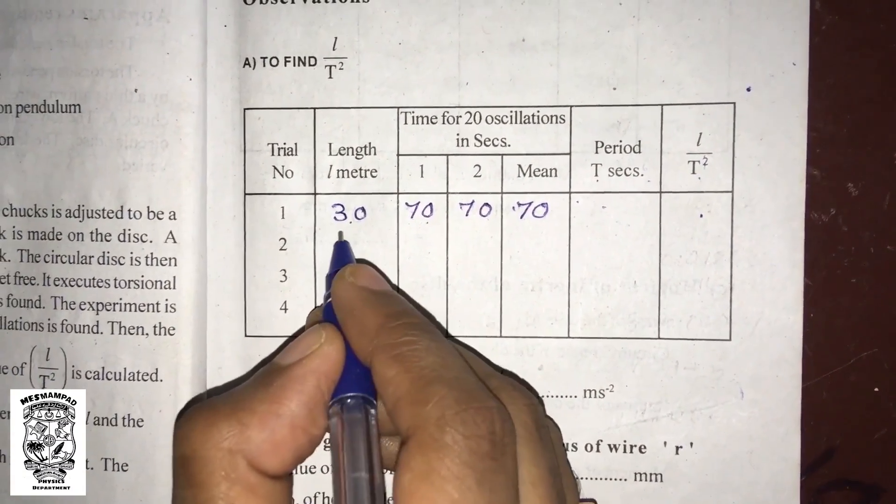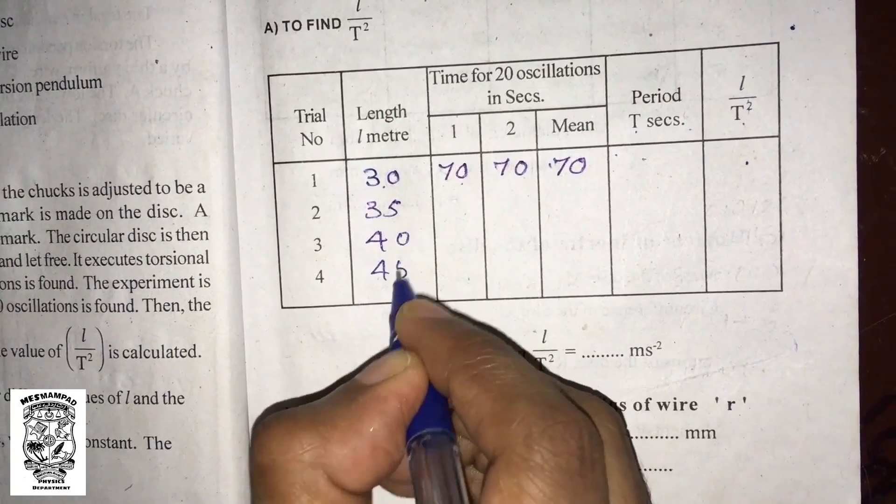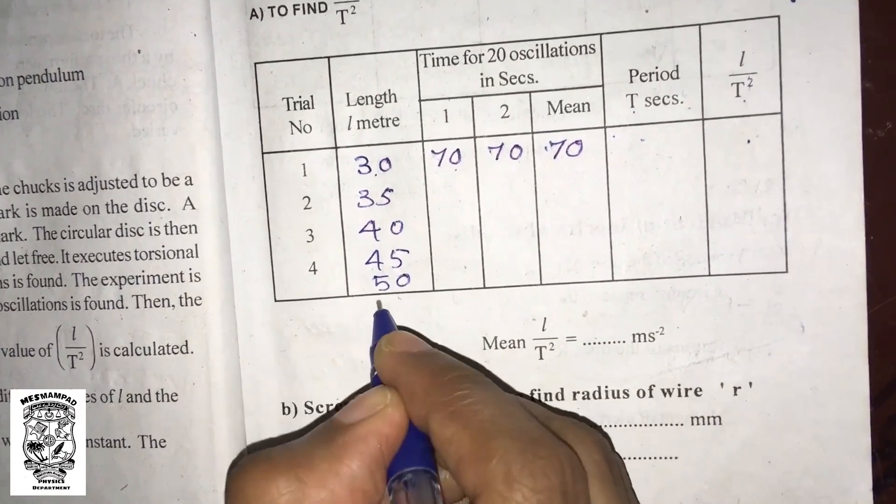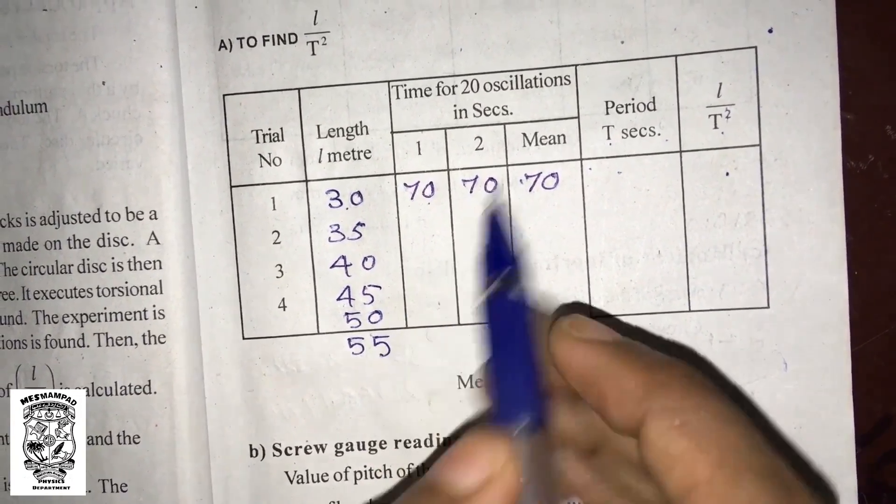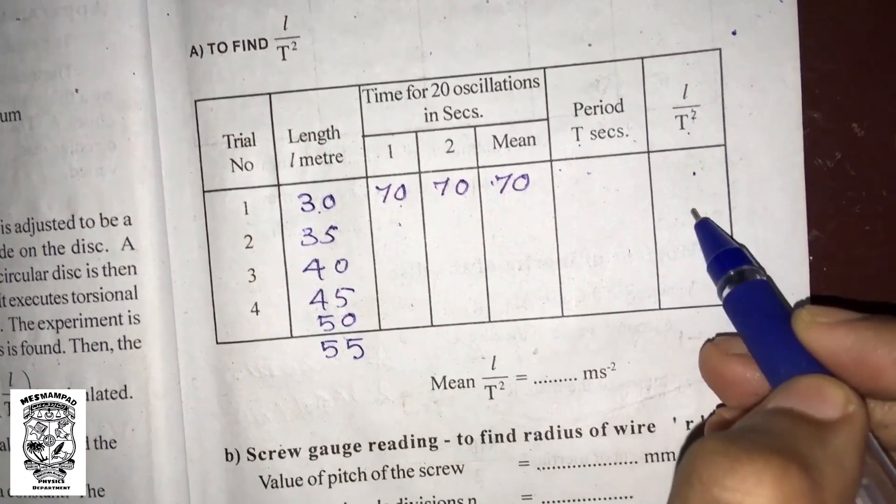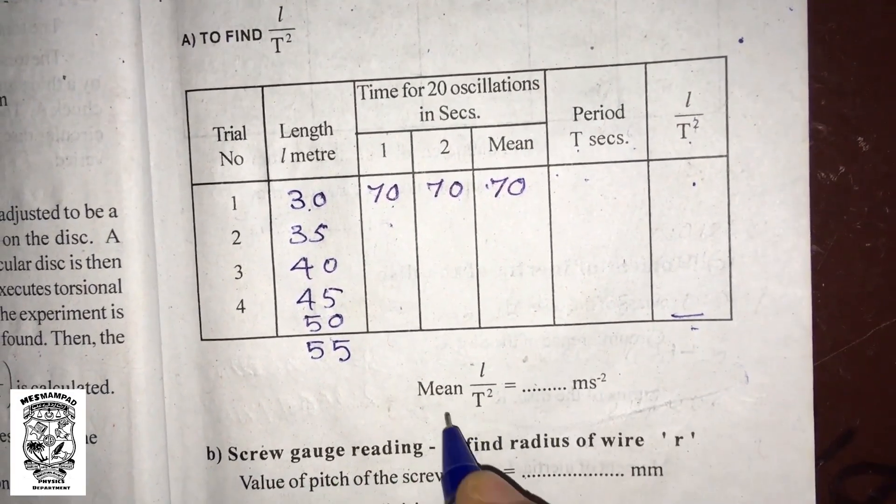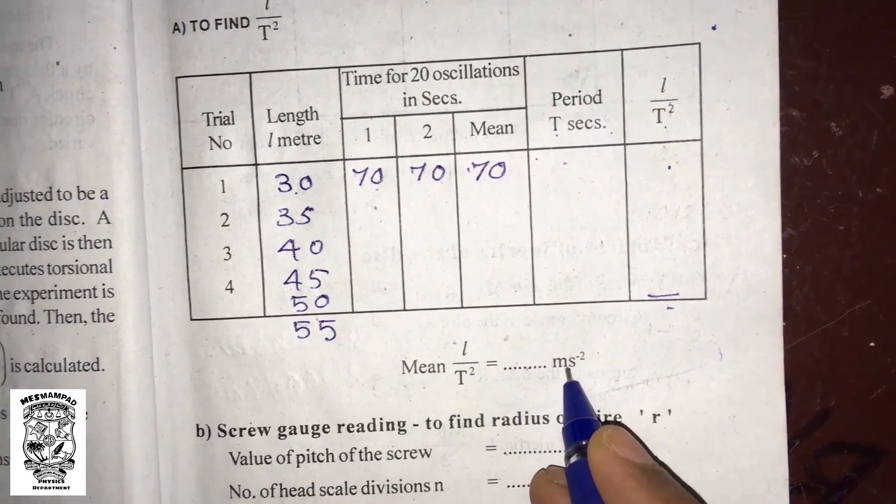For the next experiment, we can calculate L by T squared. We get a value of L by T squared, and we can calculate the mean L by T squared.